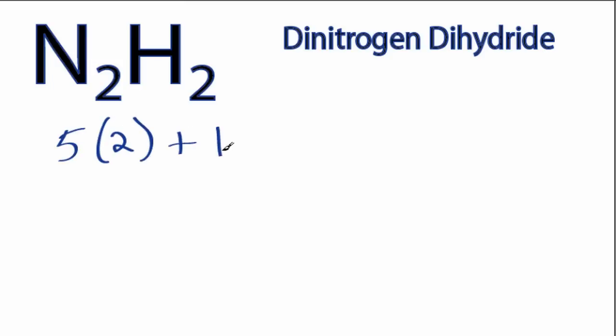Hydrogen's in group 1, it has 1 valence electron, and we have 2 hydrogens. So 10 plus 2, a total of 12 valence electrons.